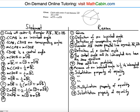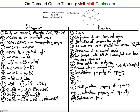Next, subtract the measure of arc DB from both sides to isolate arc CD. We get: twice the measure of arc DB minus measure of arc DB equals measure of arc CD plus measure of arc DB minus measure of arc DB. The reason is the subtraction property of equality.